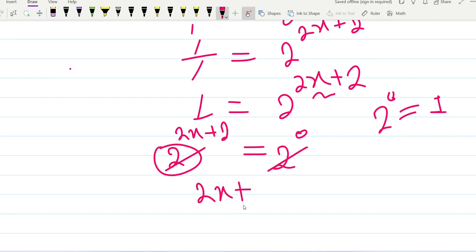Then 2x plus 2 is equal to 0. Here 2x is equal to minus 2. Then x is equal to minus 2 divided by 2.